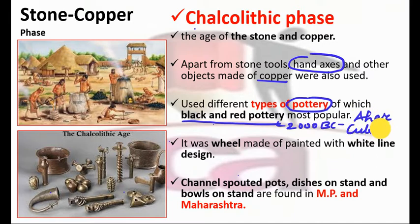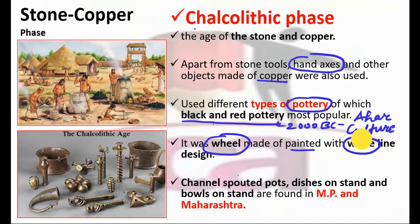I will make a separate video on the Ahar culture. The pottery was wheel-made and painted with white line design. So it was red or black colored pottery with white line design on it.